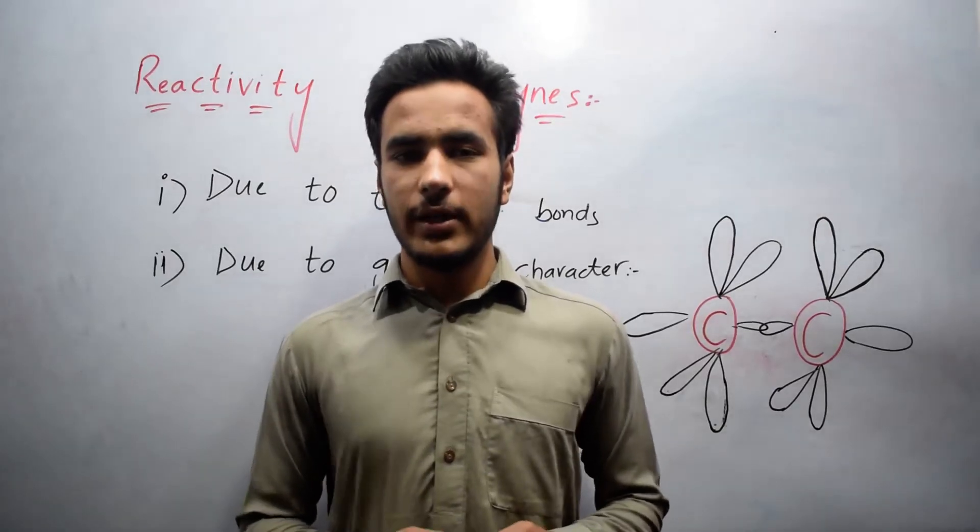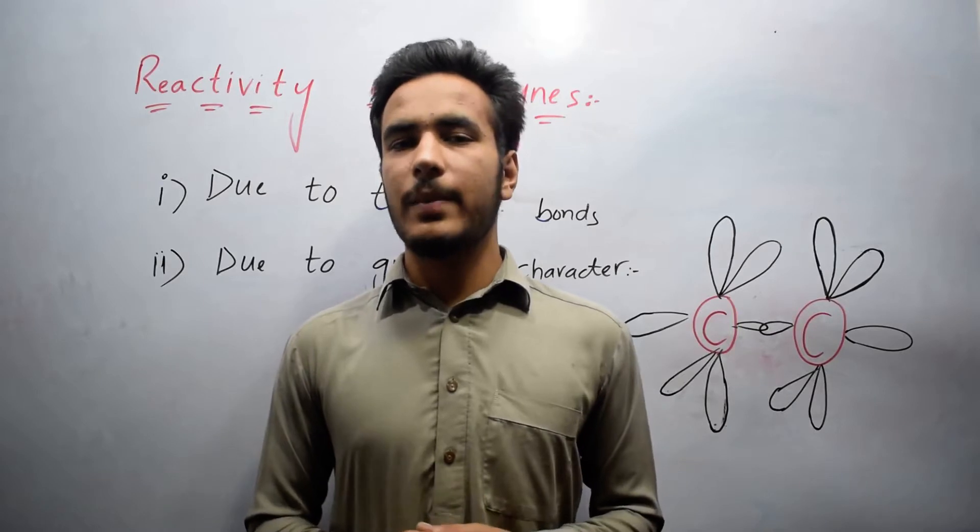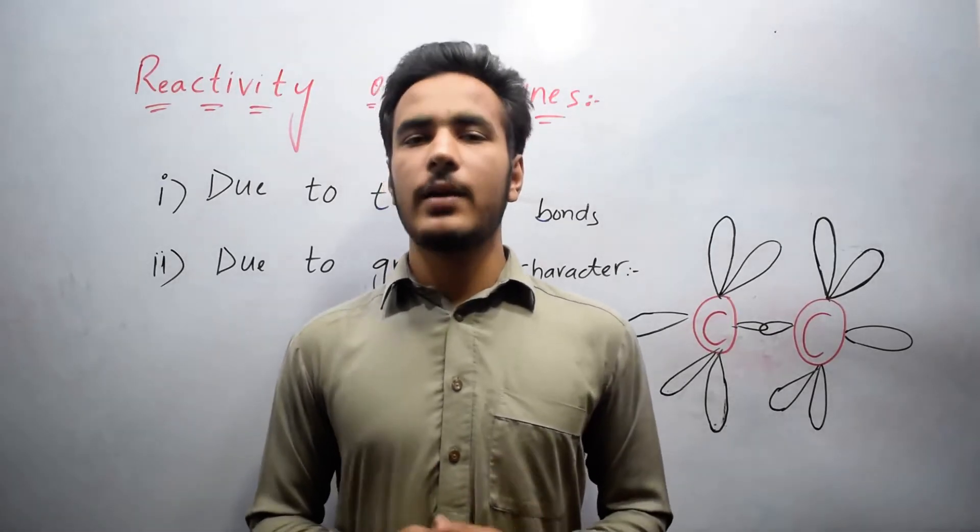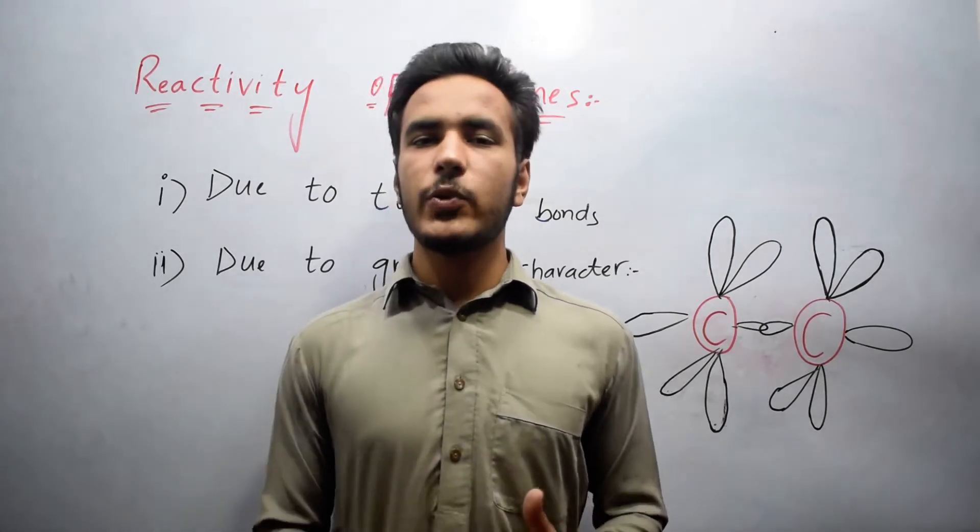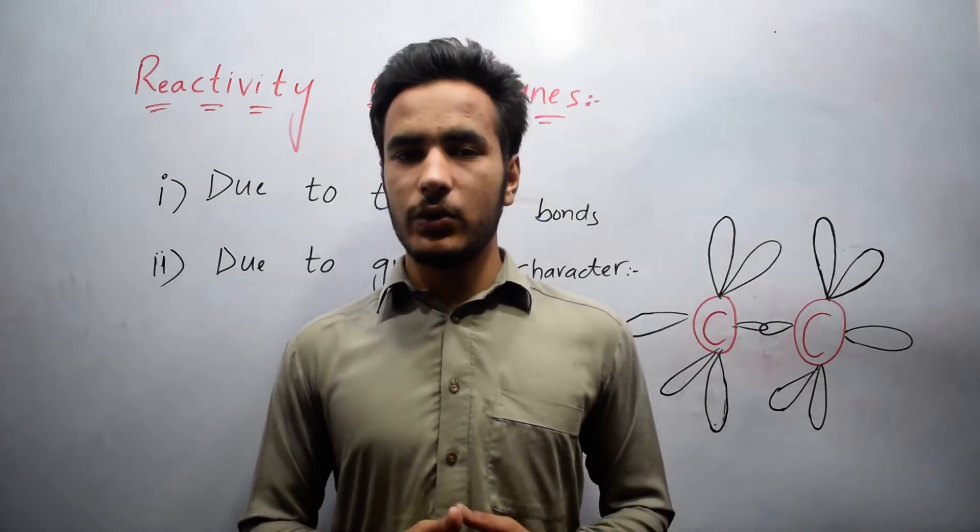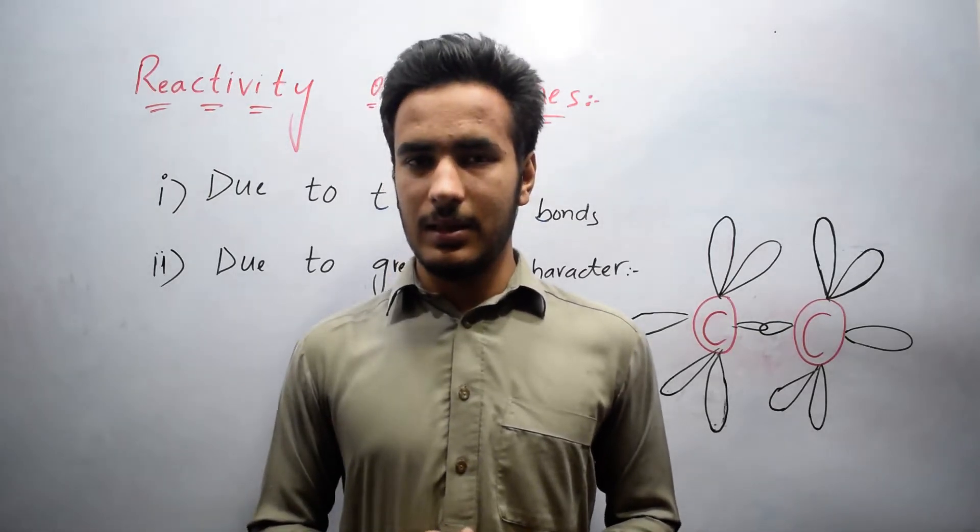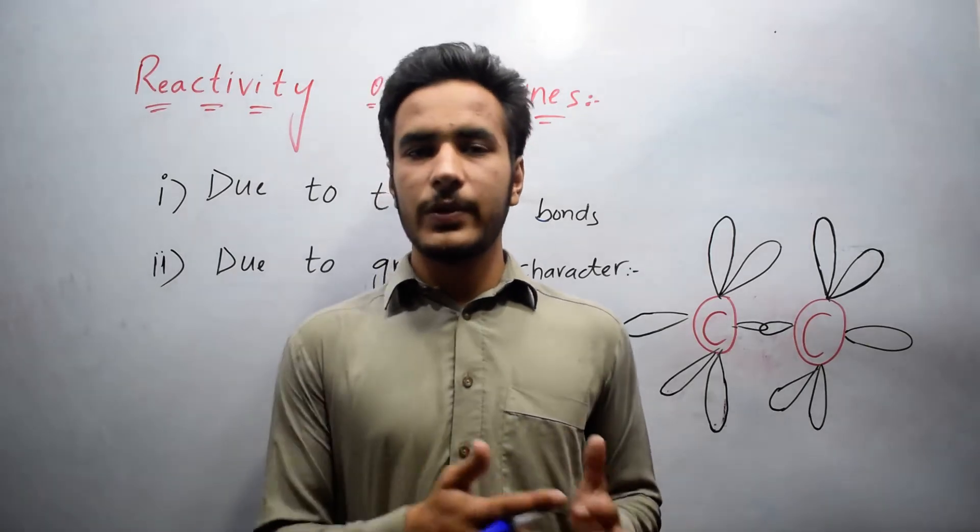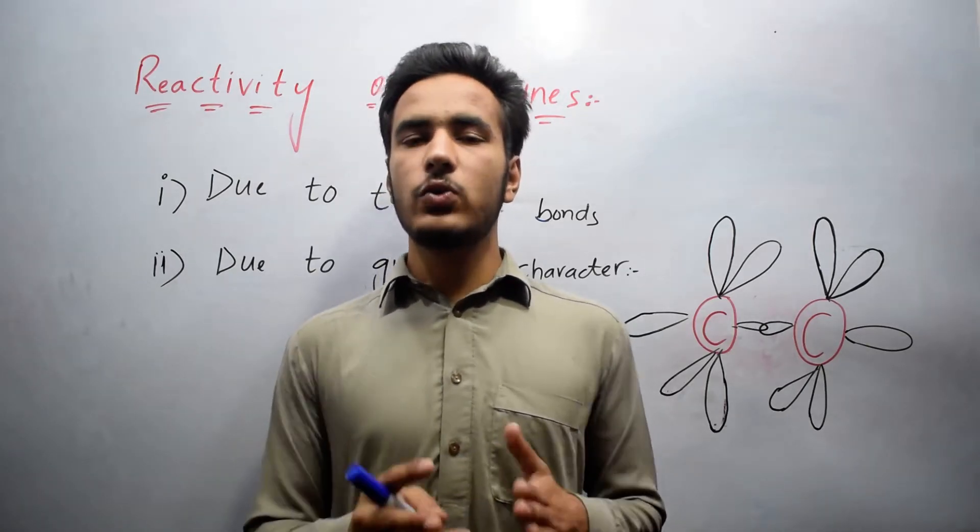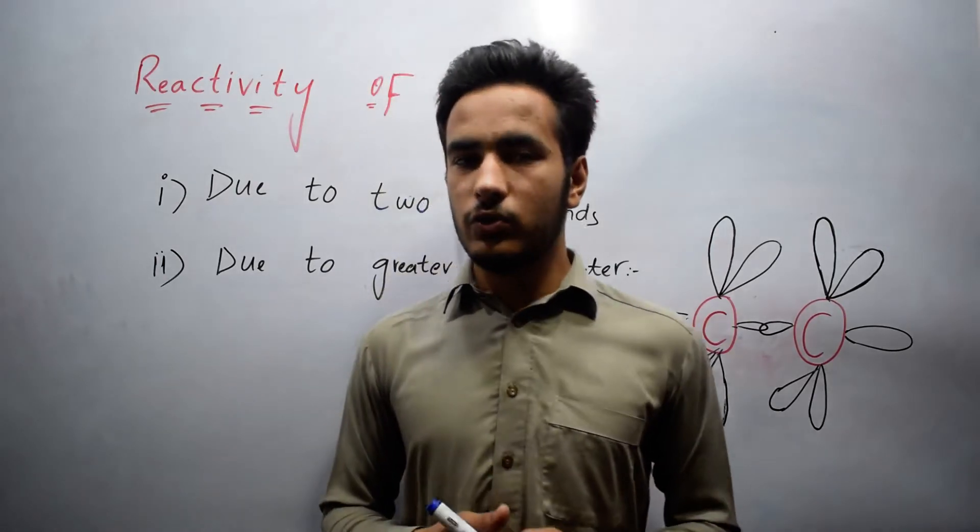Alkynes are unsaturated hydrocarbons which contain carbon-carbon triple bonds. Here we will discuss reactivity of alkynes, whether it is more reactive than alkenes or less reactive than alkenes. It has been proved that alkynes are less reactive than alkenes due to two reasons, and we will explain these two reasons.